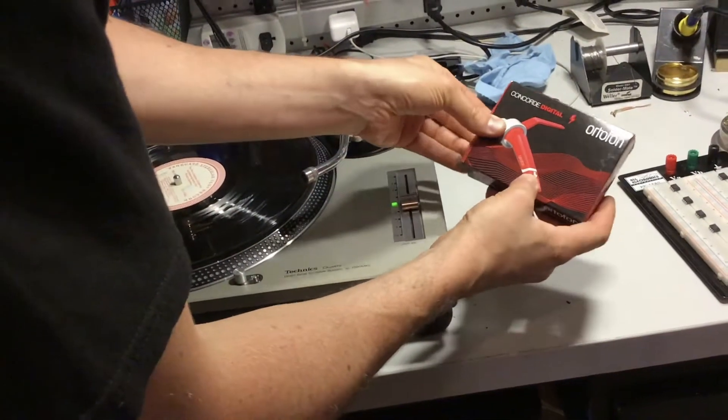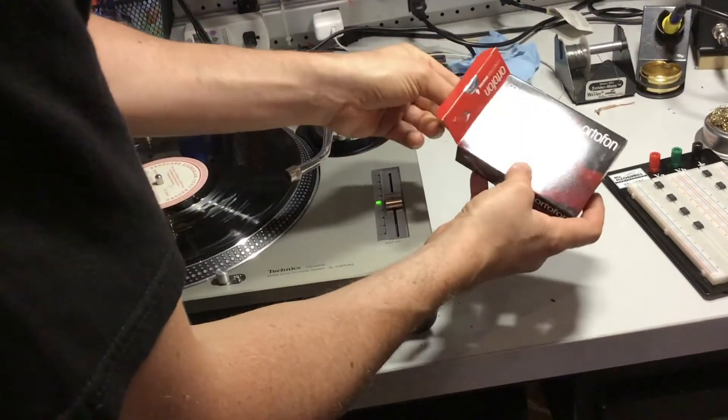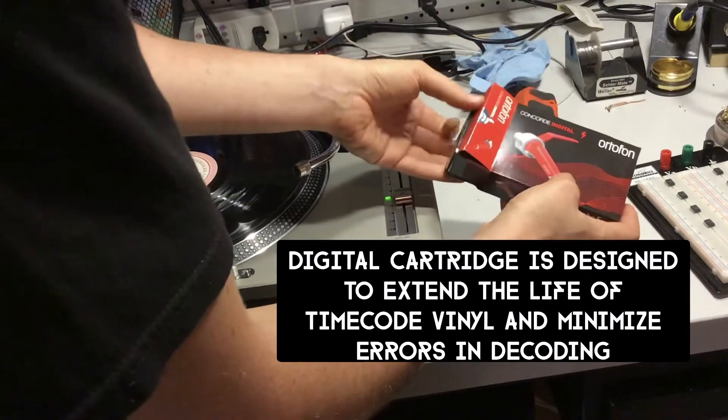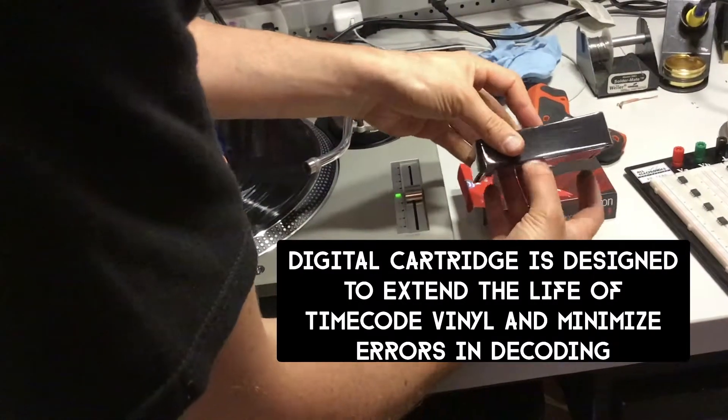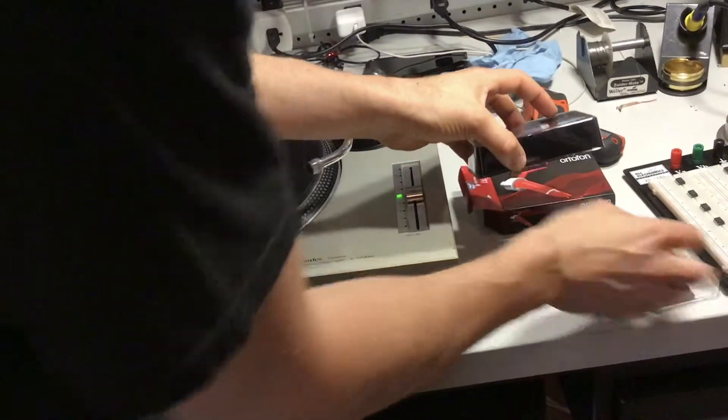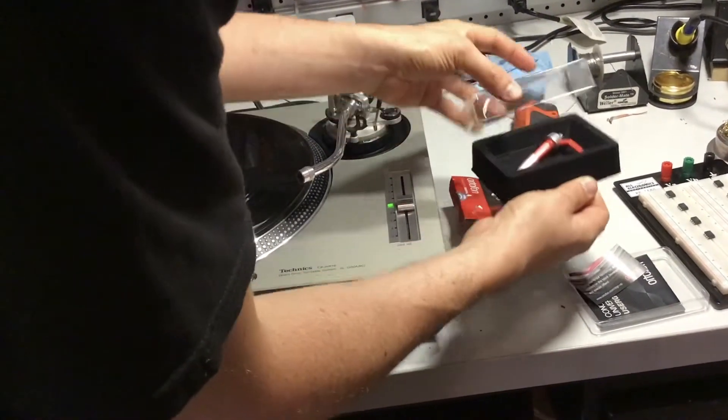Here's the Concord Digital. It's red. It's designed for Serato timecode records, and if you have any experience with it, you know that the timecode vinyls don't actually have music on them per se, but it's just information that gets turned into a control signal.